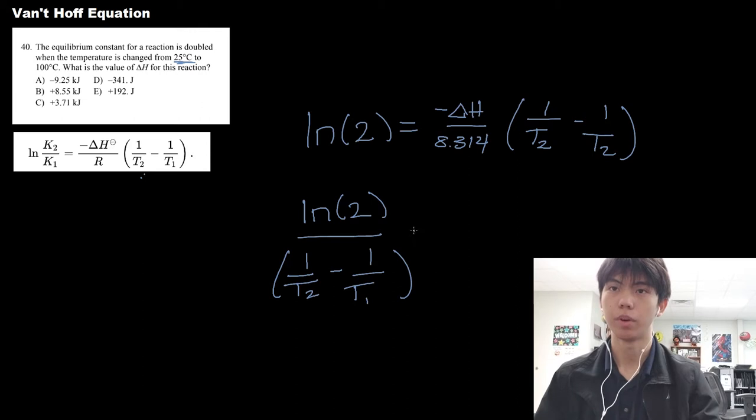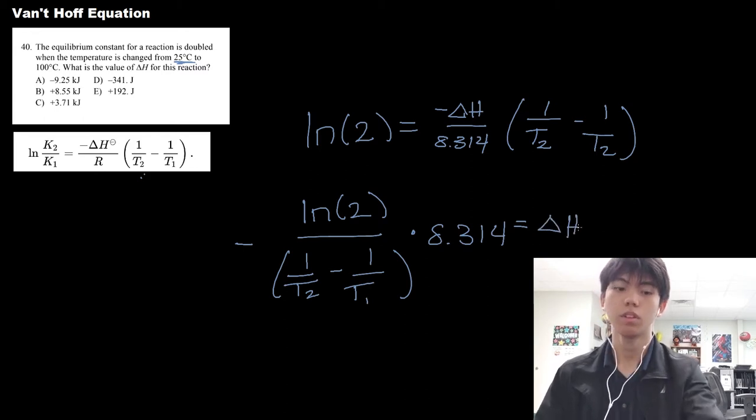And you multiply this by the R value, and you should be given your negative delta H. And actually, you can multiply the negative over, so the negative of all of this should equal your delta H.